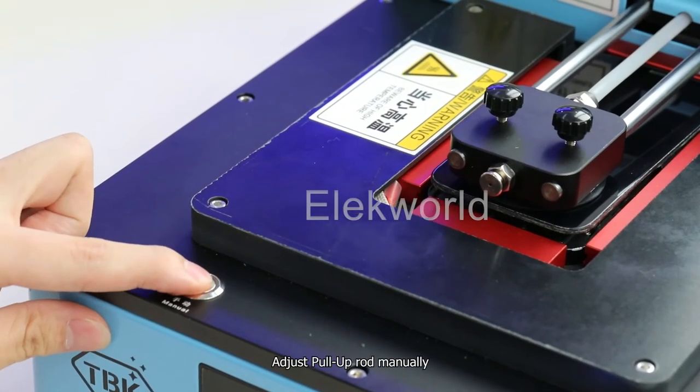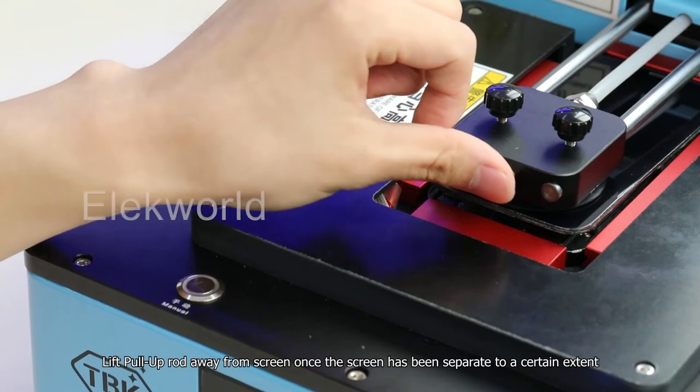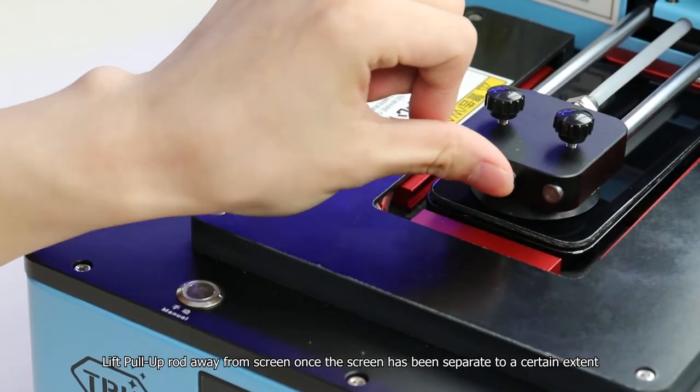Suggestion: adjust the pull-up rod manually. Lift the pull-up rod away from the screen once the screen has been separated to a certain extent.